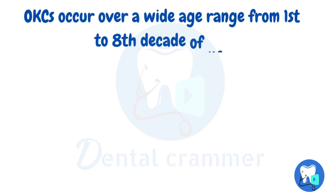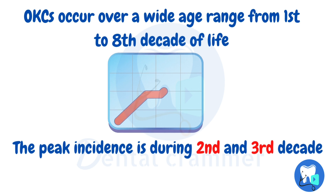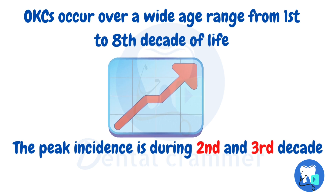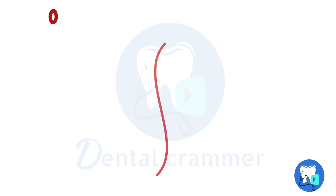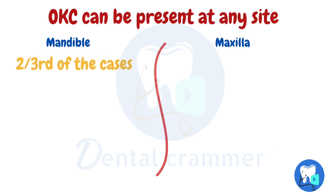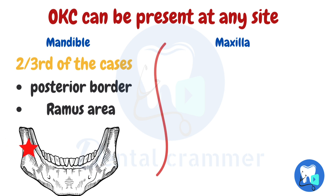OKC occurs over a wide age range from the 1st to 8th decade of life, with the peak incidence being during the 2nd and 3rd decade. OKC can be present at any site in both jaws, but in two-thirds of the cases it is present in the mandible, with the most common location being the posterior border and the ramus area.